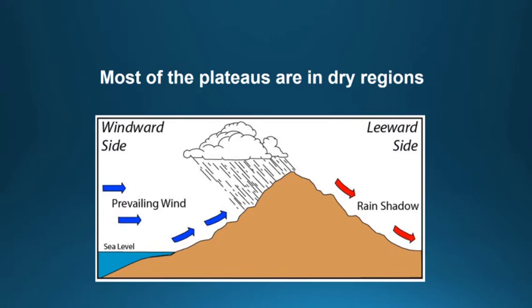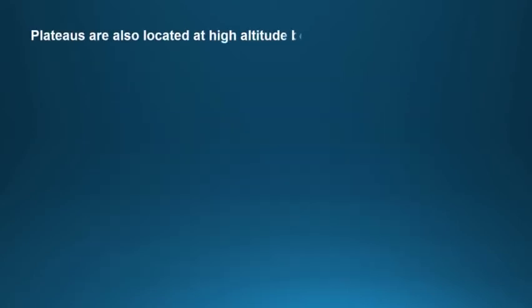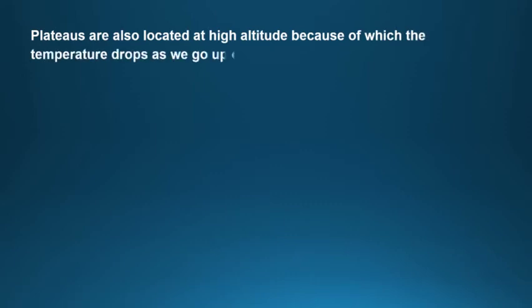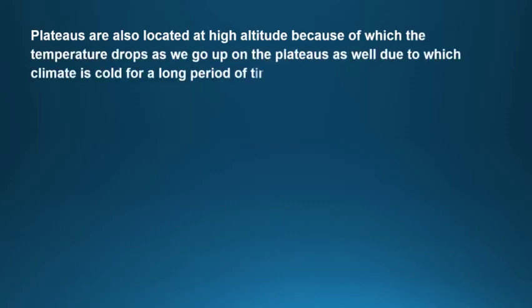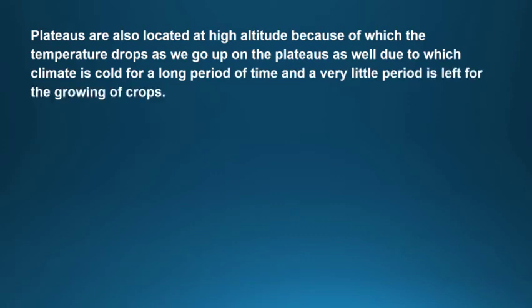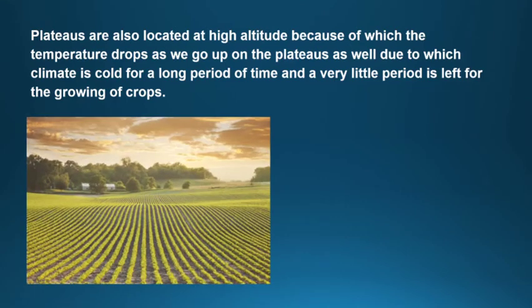Plateaus lie on that side of the mountain which does not get much wind and is sheltered from it. Because of this, the area gets very little rainfall. Just like mountains, plateaus are also located at high altitude, due to which the temperature drops as we go up. The climate is cold for a long period of time, and very little time is left for the growing of crops.